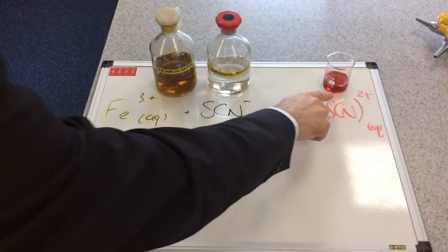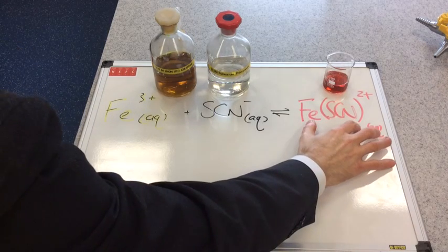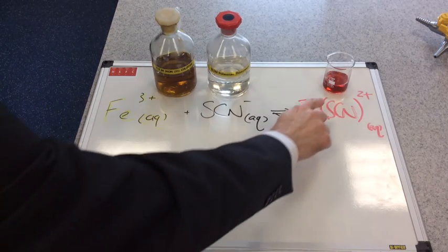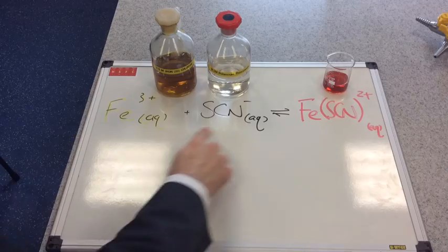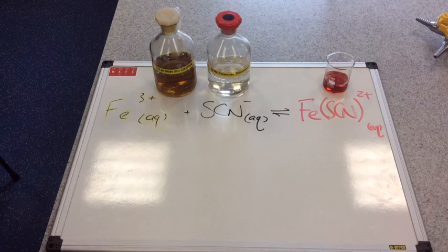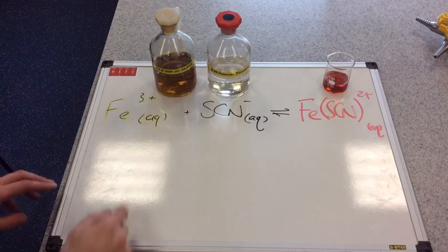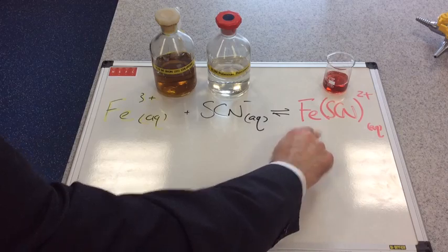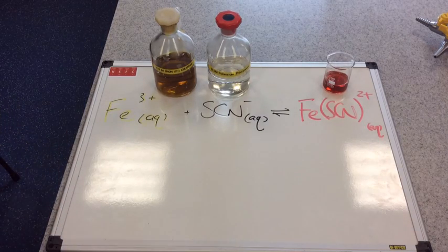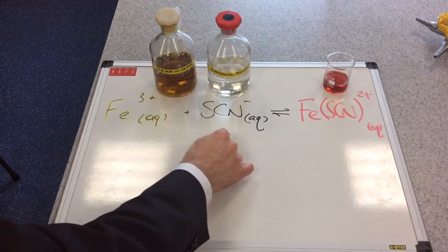You can see now in the beaker I've got this red colored solution because I have this ion present, and what's happened is this has actually reached an equilibrium. If you remember the definition of a dynamic equilibrium, it is achieved when the rate of the forward reaction is equal to the rate of the reverse reaction. Inside this beaker now we have all three ions present.